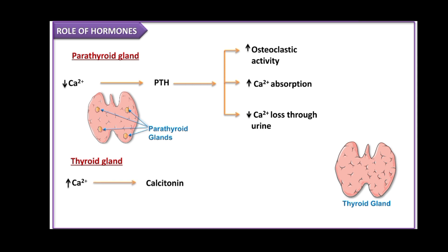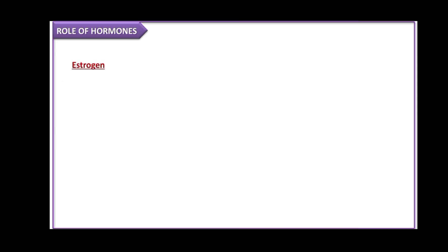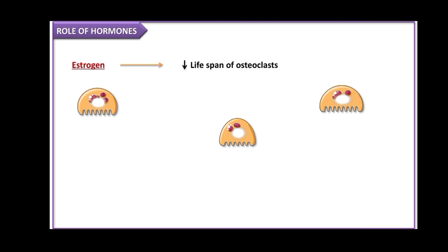Next we have the thyroid gland. In response to increased serum calcium, the thyroid gland secretes calcitonin, which reduces osteoclastic activity and thus promotes bone formation. Then we have estrogen — this hormone shortens the life of osteoclasts by the process of apoptosis, thus promoting bone formation.